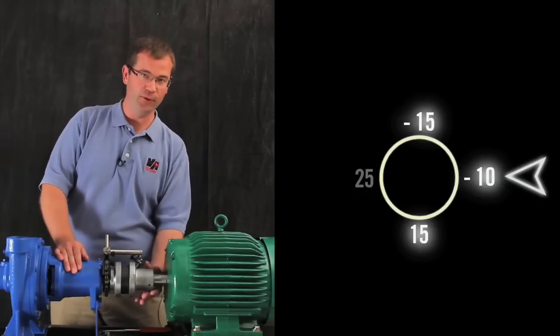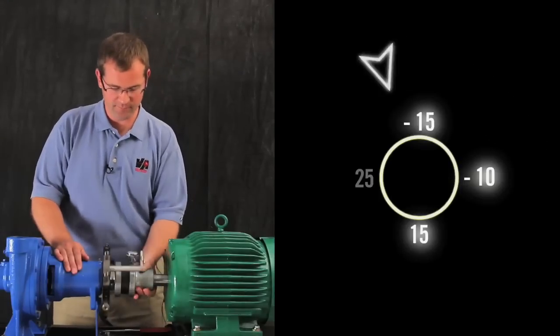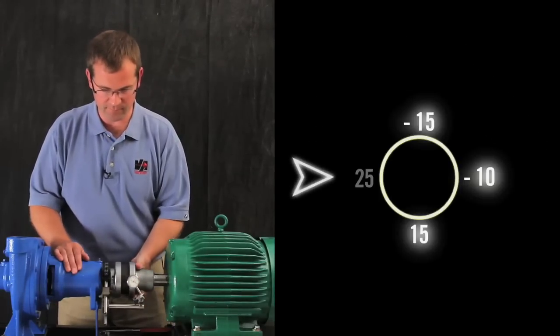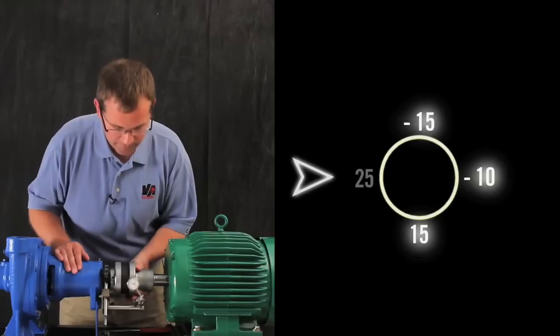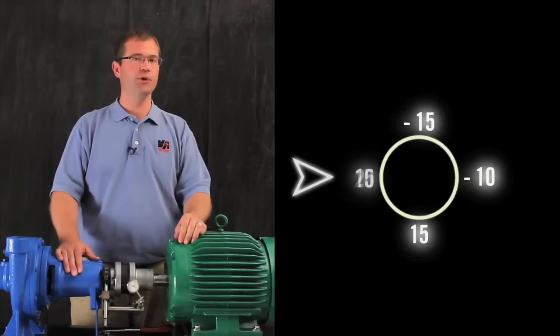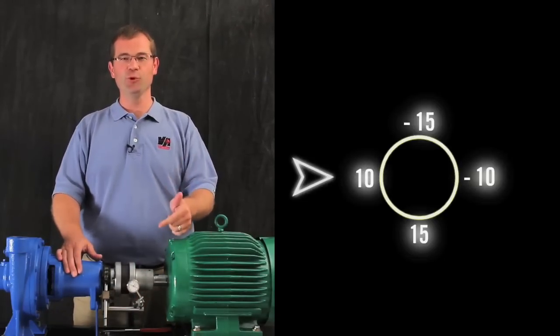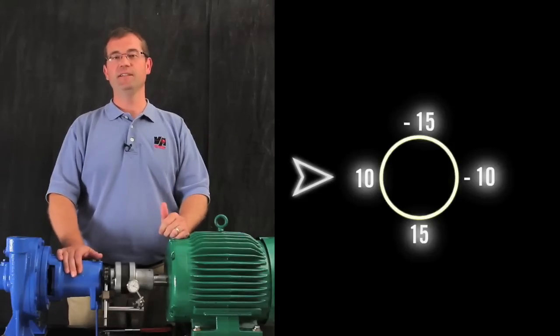So what happens if I roll it to 9 o'clock? You're right. Since we're reading true position, it still reads 10 mils.